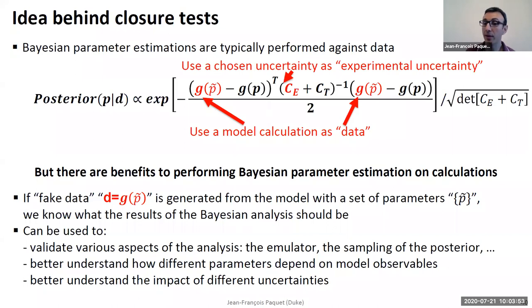Because of course, an emulator always has uncertainty. It will have this interpolation uncertainty that we discussed. And you want to make sure that this is not interfering with your ability to constrain your model parameters. You can also make sure that you're sampling the posterior right. And so you can validate from beginning to end your Bayesian parameter estimation with closure tests, because you know what the answer is, which is not the case when you compare with data. You never know what the answer is.